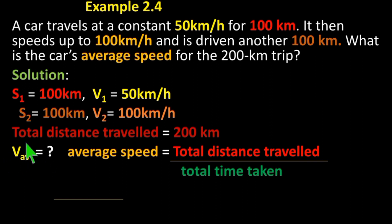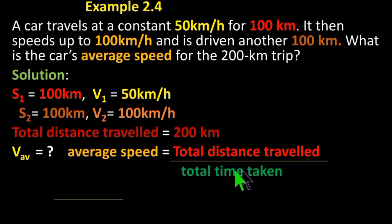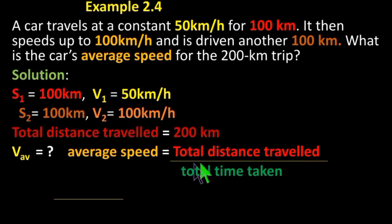Required: average speed. Average speed is equal to total distance traveled over total time taken. Total distance is 200 km divided by total time taken.